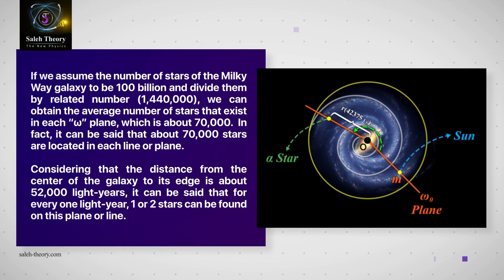Considering that the distance from the center of the galaxy to its edge is about 52,000 light years, it can be said that for every one light year, one or two stars can be found on this plane or line.